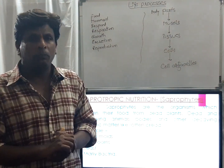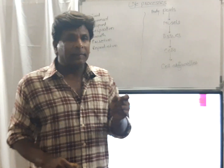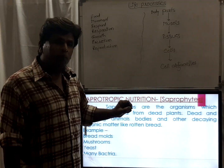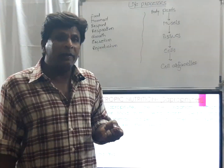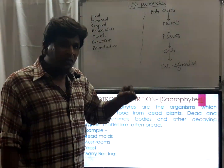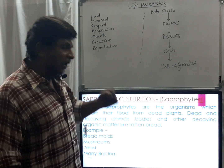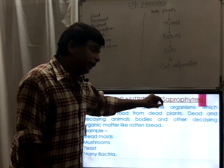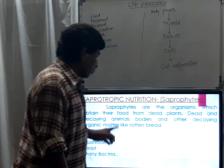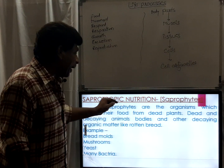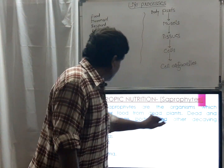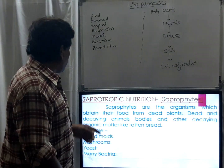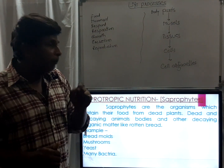Sapro means dead. Saprotrophic organisms are called saprotrophytes. Saprotrophytes are organisms which obtain their food from dead plants, dead and decaying animal bodies, and other decaying organic matter like rotten bread. This is the definition of saprotrophic nutrition organisms, that is, saprotrophytes.